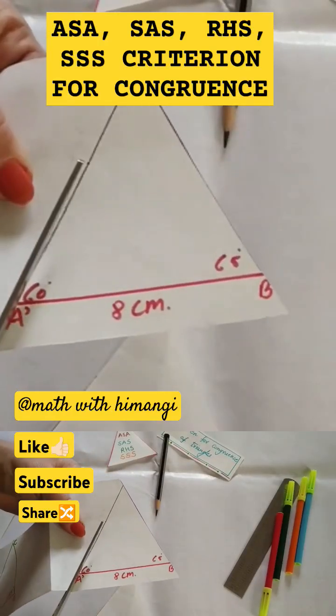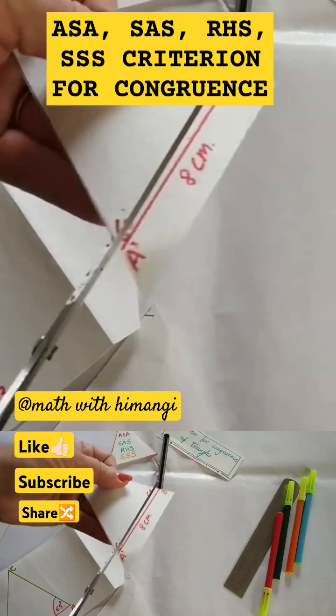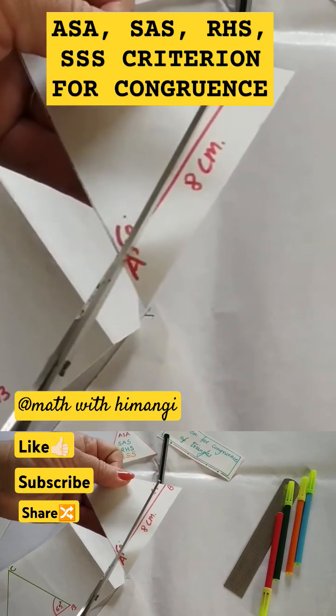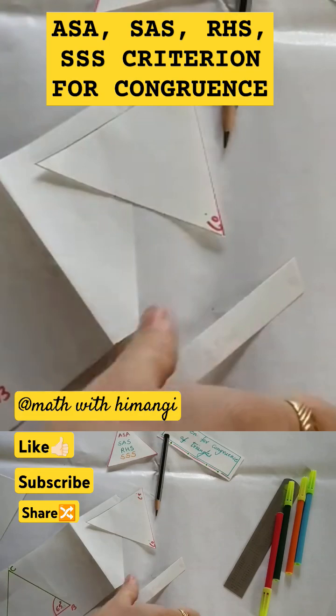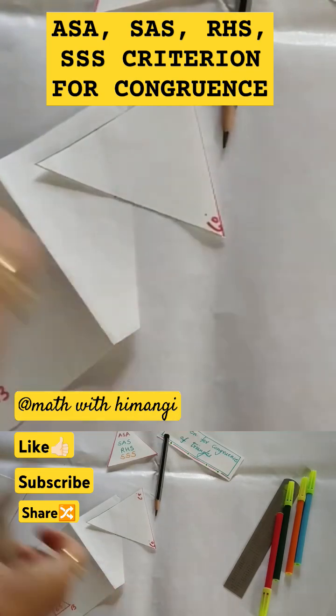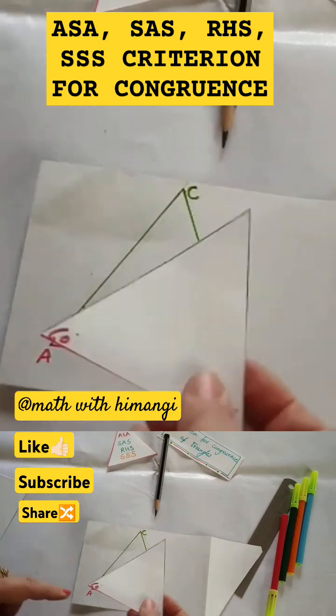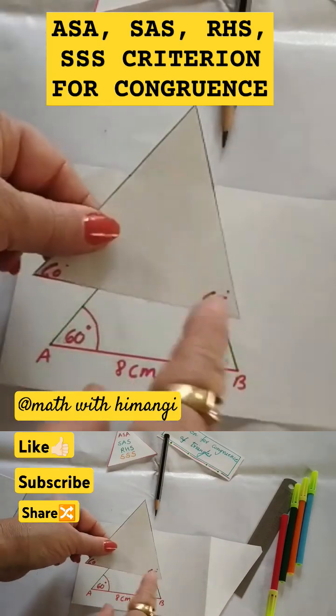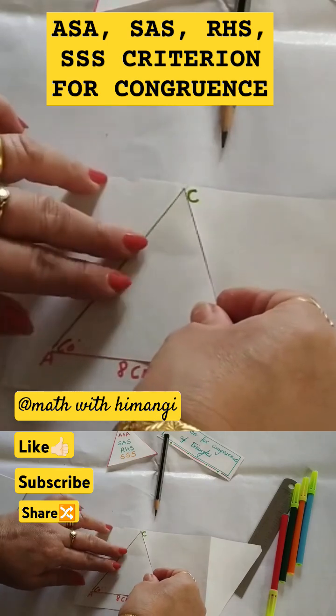To cut this triangle. So the triangle just now we have created, I have cut that triangle and now I will keep this on the first one. 60 degrees and 60 degrees, 65 and 65, this is 8 centimeters. So here you can see